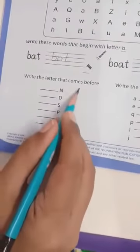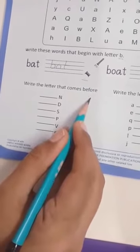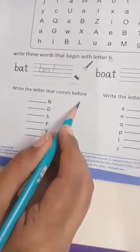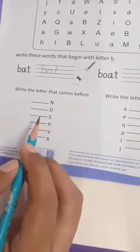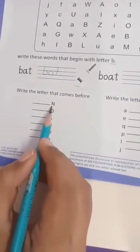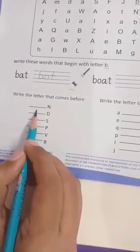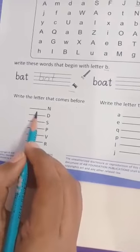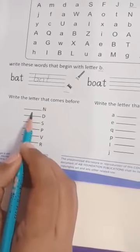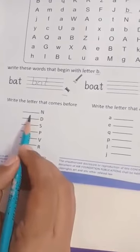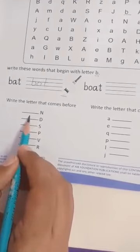After this, write the letter that comes before. This way, we have done letter A in the worksheet. Letters that come before, which letter comes before the letter? Have you remembered it? Okay. Now, read with letter A. Start.